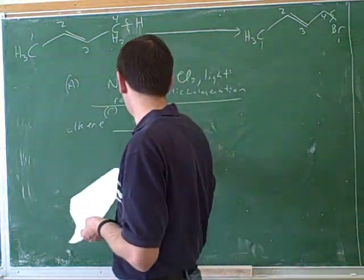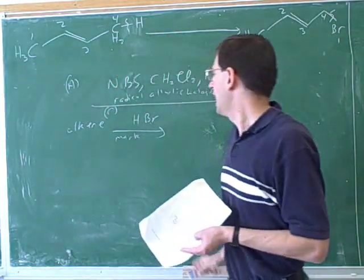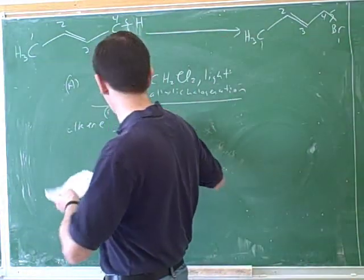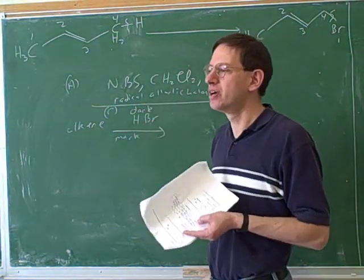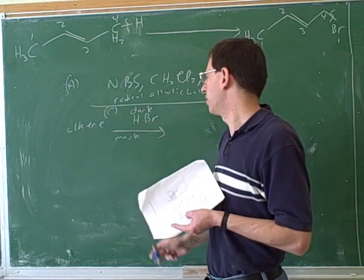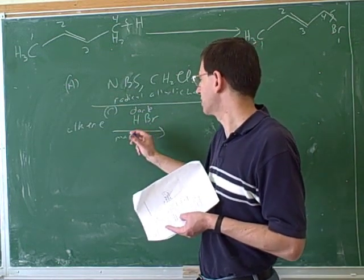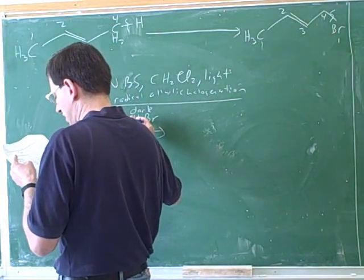This would be our normal Markovnikov addition to an alkene. And the fact that it's dark indicates that we know we're not going to do any radical mechanisms. Even if they didn't say dark, though, as long as they don't give you an extra source of energy, like light or a radical initiator like peroxides, we would think that this is just a normal addition. So the main reaction here would be to attack the alkene.